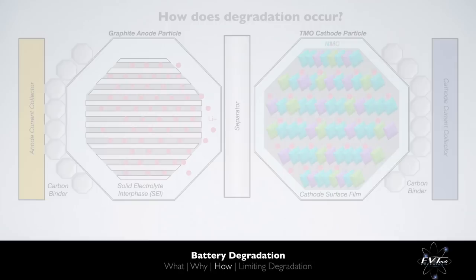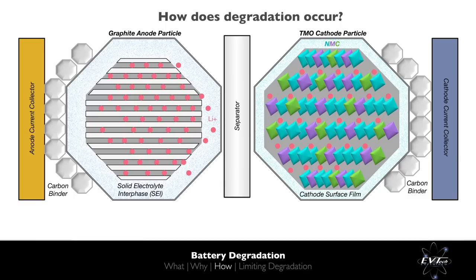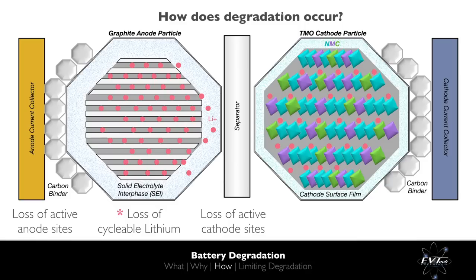Let's use a simplified schematic of a typical lithium-ion cell to explain how degradation occurs. Our simplified schematic shows a single graphite anode particle, a single NMC cathode particle connected to an aluminium current collector, and these two particles are held apart by an electrically insulating, ionically conductive separator material. We will incur degradation if we have a loss of active anode sites within which we can insert lithium ions, or if we lose cyclable lithium from our cell, if we have a loss of active cathode sites, if the movement of lithium ions becomes more difficult, and if our electrical resistance increases. These items represent our degradation mechanisms.